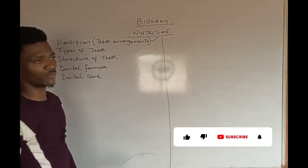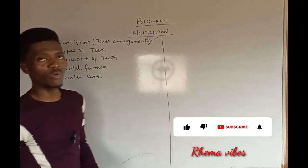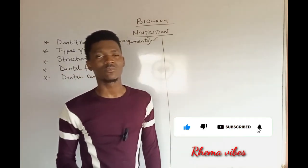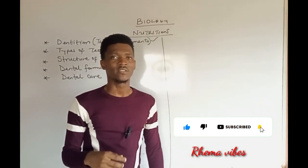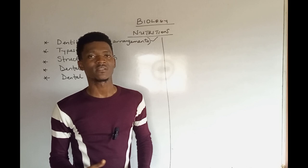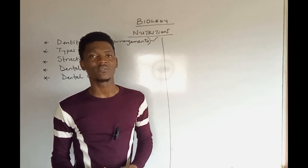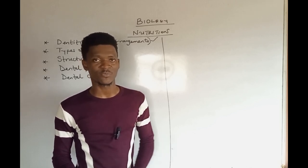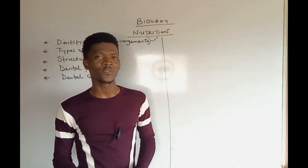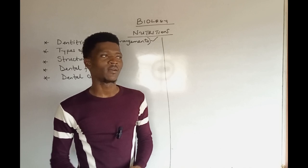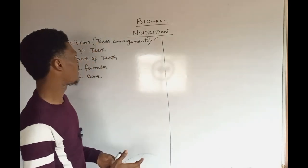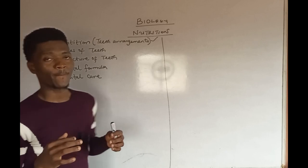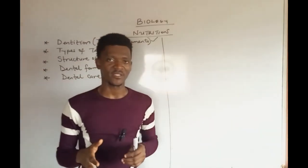Let's start by looking at dentition. When we talk about dentition, we are simply referring to the different number of teeth found in the mouth of organisms as well as their arrangements. We have quite a number of teeth present in vertebrates.